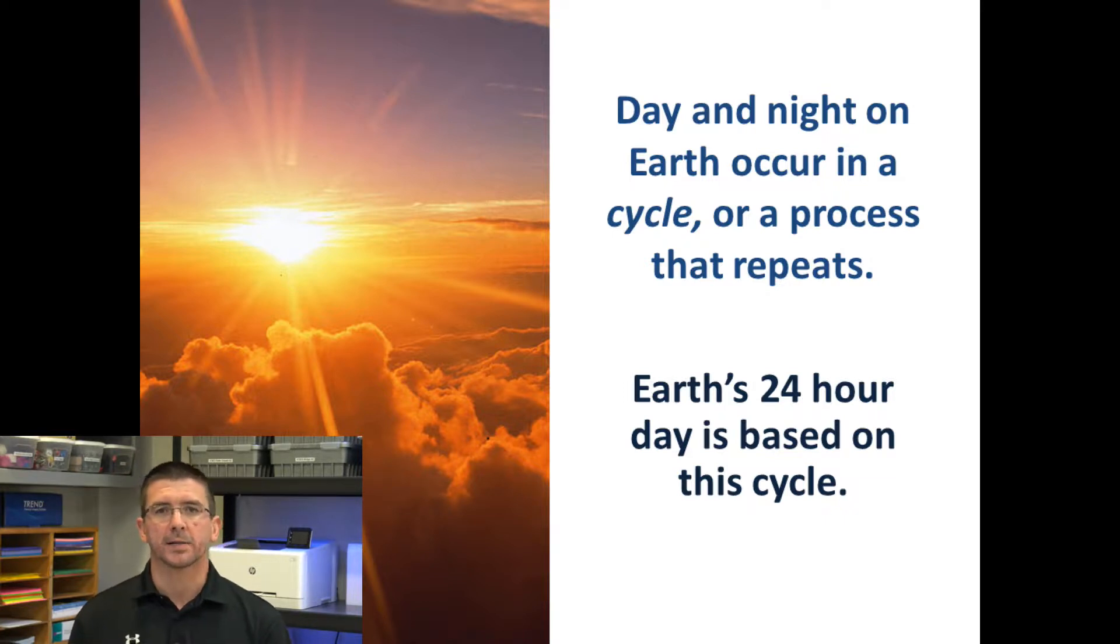Earth's cycle of day and night is no different. You have a 24-hour cycle where we have a period of daylight followed by a period of darkness. We're going to look in this lesson about why that actually happens.